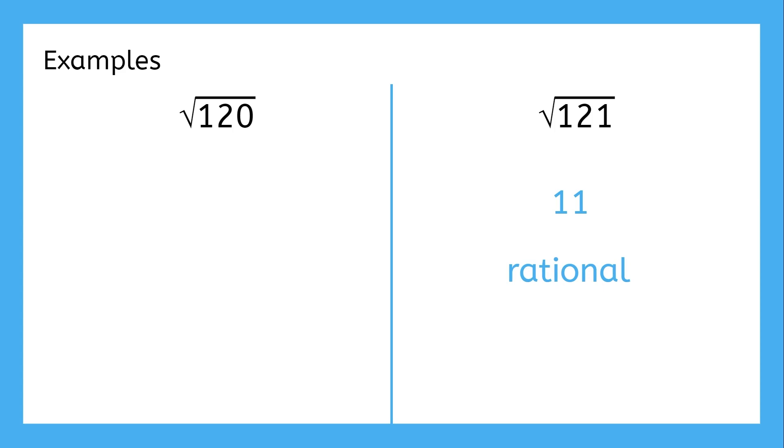120, however, is not a perfect square. There are ways that we can simplify the square root, which you'll learn later. But the decimal form looks like this. Does that look like a rational number to you? Of course not.